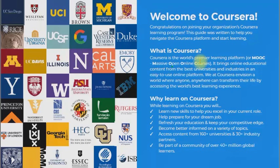If you look at the slide, you will see many universities on the left-hand side, like the University of Toronto, the University of London, Duke University, the University of Virginia, and many more universities.